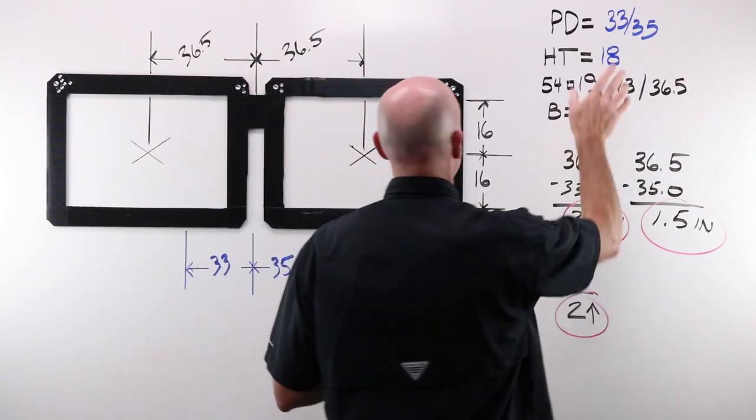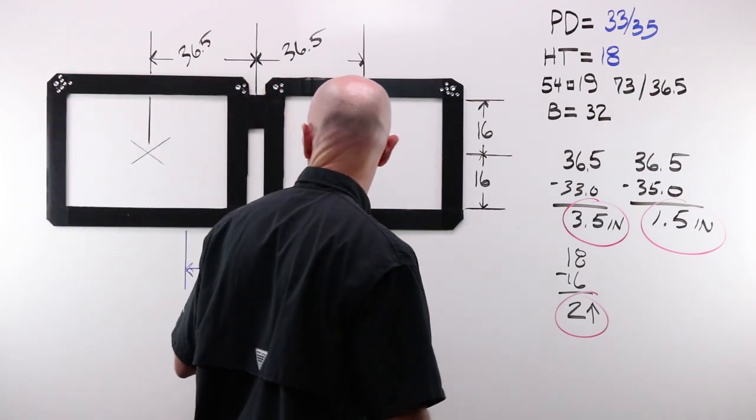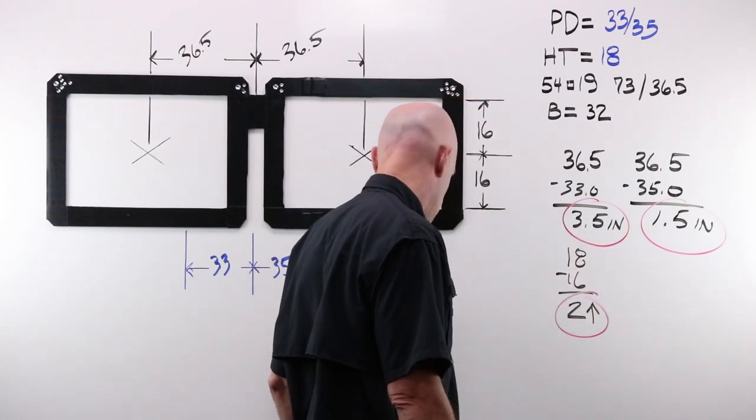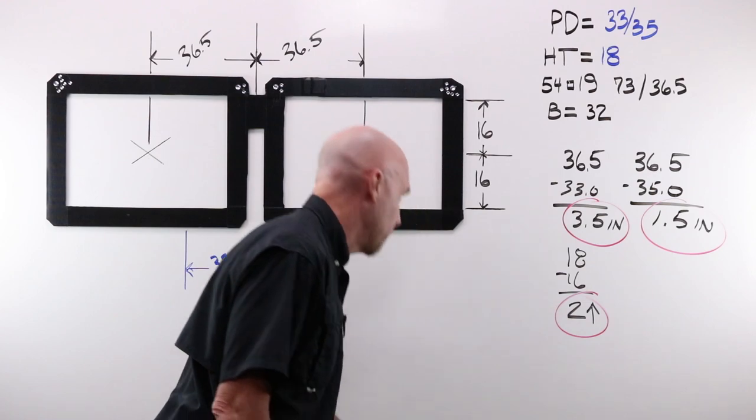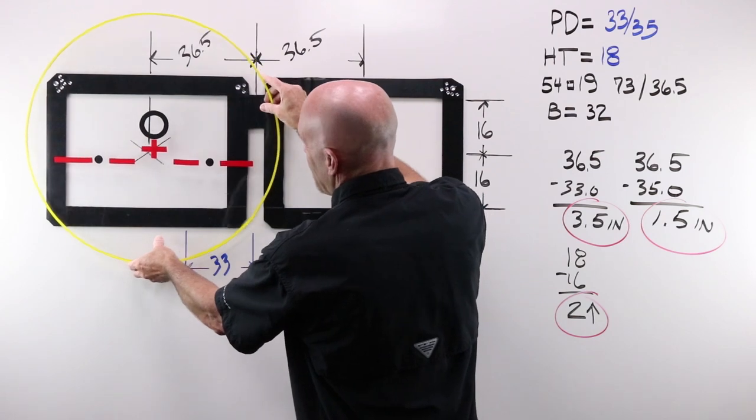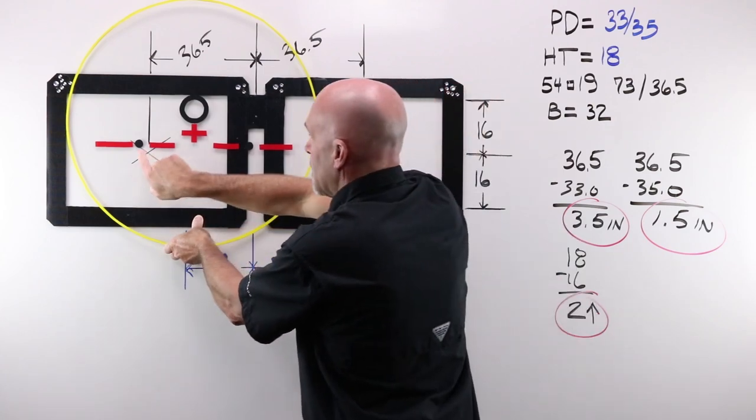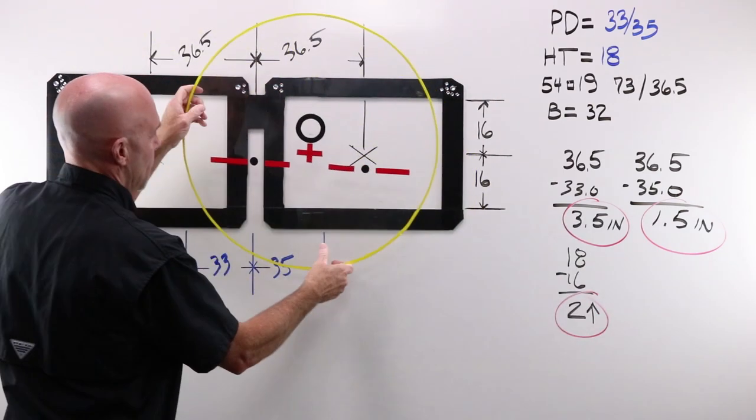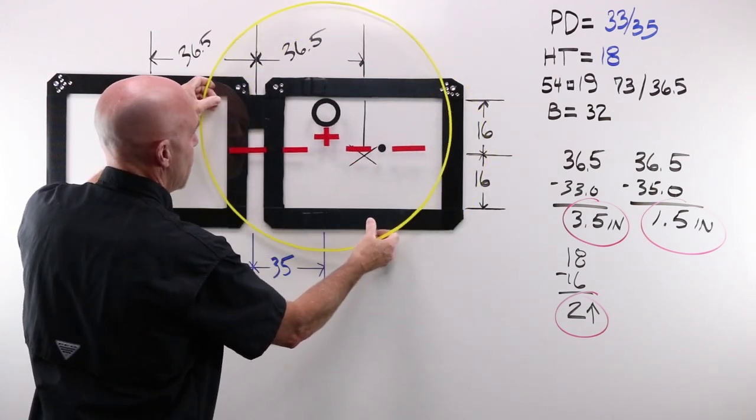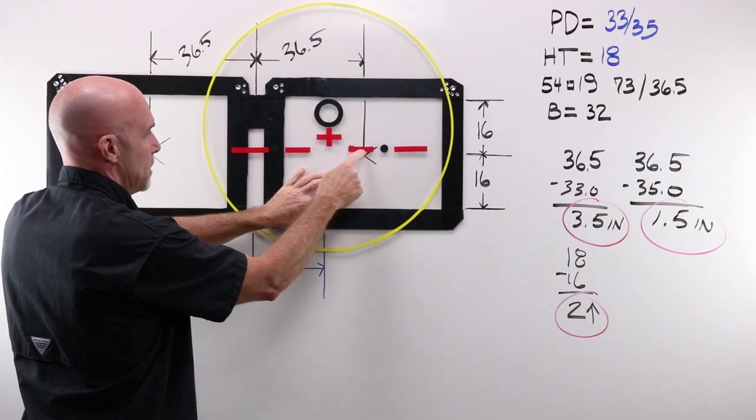I've got monocular PDs, so I need to do monocular frame. Geometric center eye wire openings, 36.5. My human, 33 and 35. I'm gonna move three and a half in for my right, one and a half in for my left, and two up for both. I'm gonna take my fitting cross. And I'm not gonna put it there. I'm not gonna put it there. I'm gonna come over and up. My block will end up here. It's not gonna be there. It's not gonna be there. It's gonna be over one and a half and up two. That's where my person is. This is where my block will go.